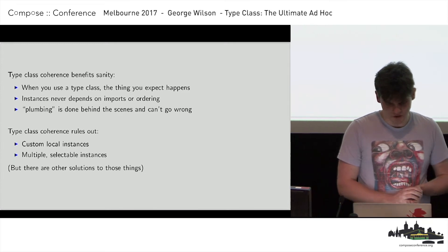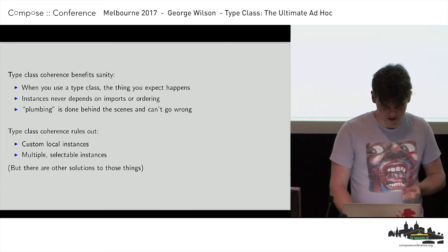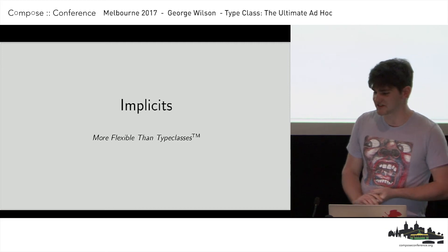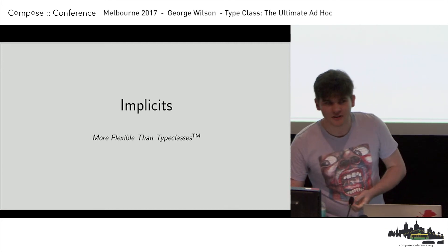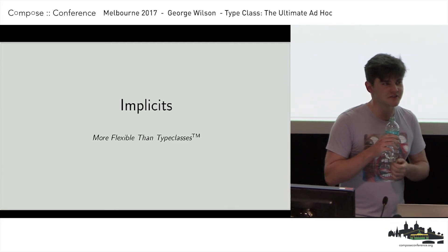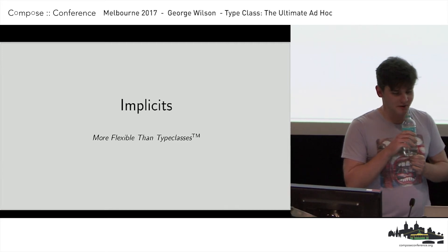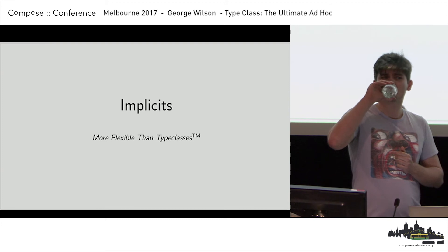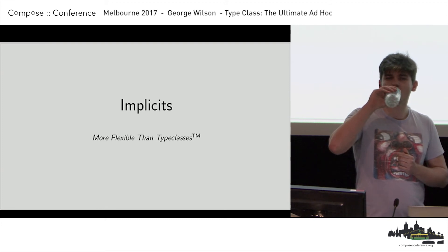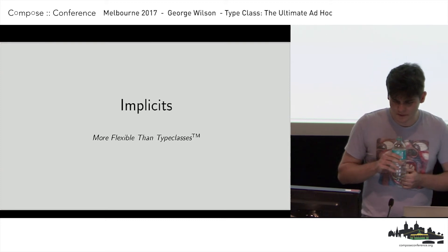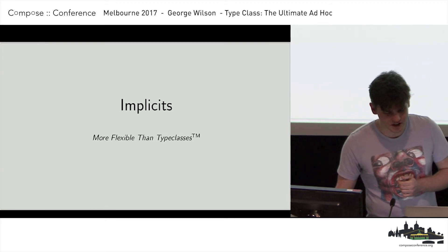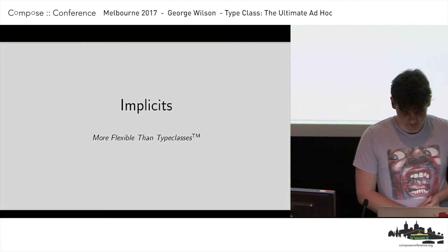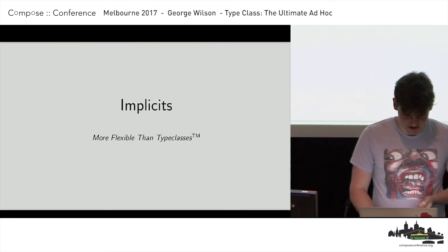So I want to look at a system that doesn't rule those things out. It's called implicits, and they're found in the Scala programming language. Implicits are more flexible than type classes. So what are implicits?